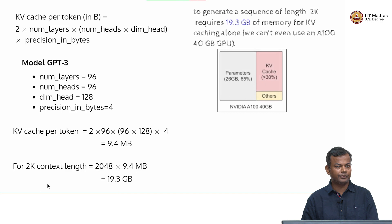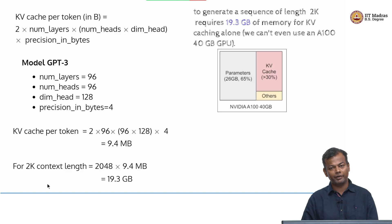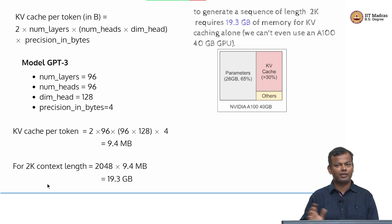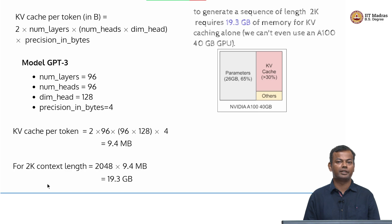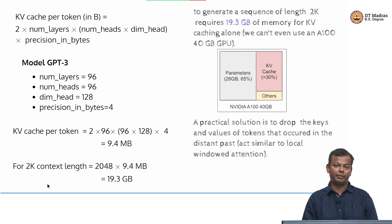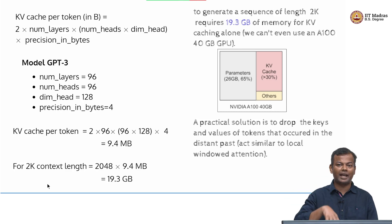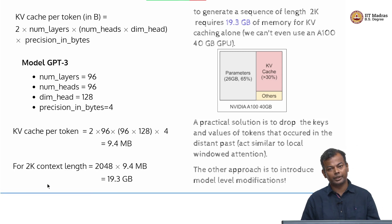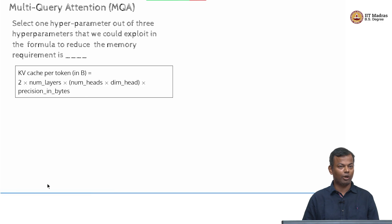That is a big requirement - even on a fairly modern GPU like an A100 40GB, you would run out of memory. So one option is to drop some keys and values from the cache and recompute them. The other option is to make some modifications to the model itself.